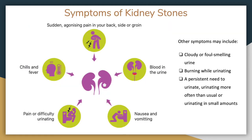Symptoms of kidney stones include severe pain in the back, side, or groin, chills and fever, pain or difficulty urinating and blood in the urine, or nausea and vomiting. Some additional symptoms could be cloudy or foul-smelling urine, burning while urinating, a persistent need to urinate, urinating more often than usual, or urinating in small amounts.